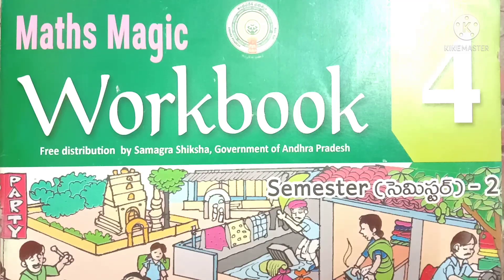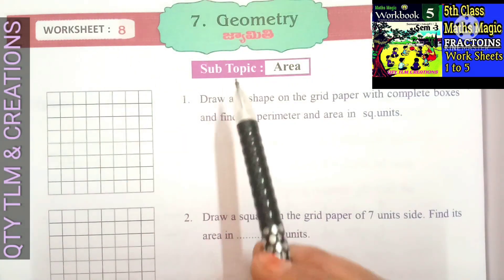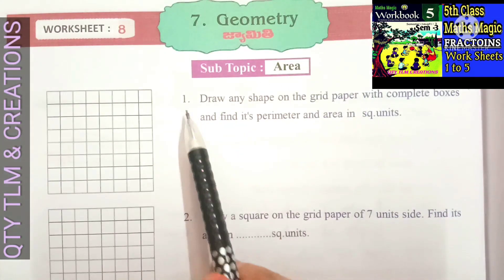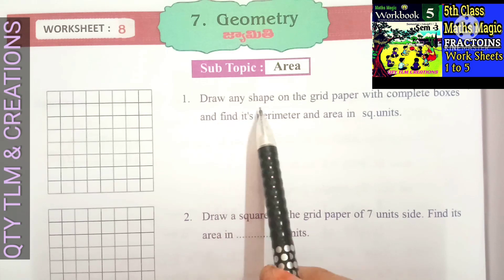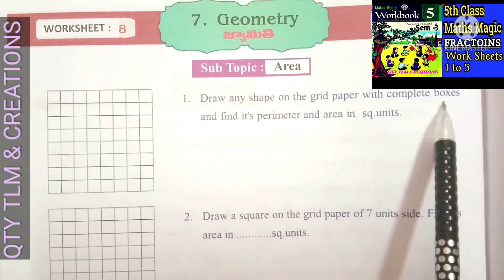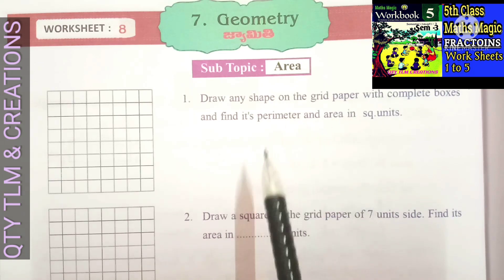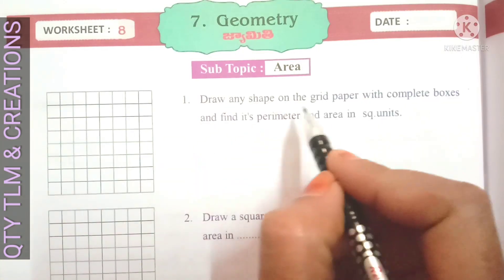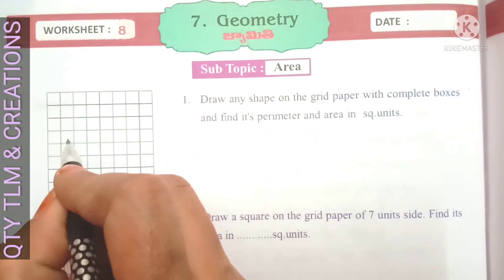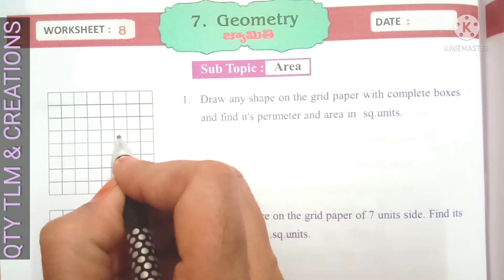Hello everyone, welcome to our channel. Today we are going to learn and write the fourth class Math Magic workbook, Semester 2, Geometry, Worksheet number 8, subtopic: Area. First question: draw any shape on the grid paper with complete boxes and find its perimeter and area in square units. We can take five boxes here: one, two, three, four, five.